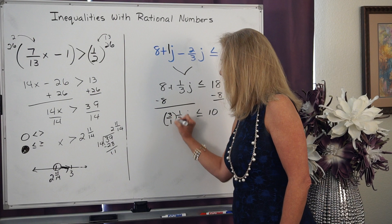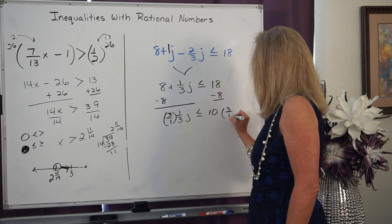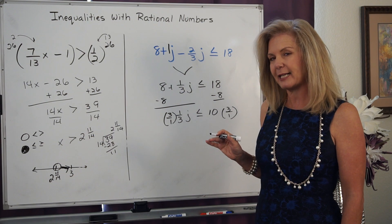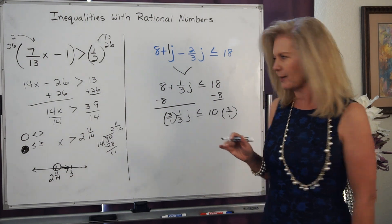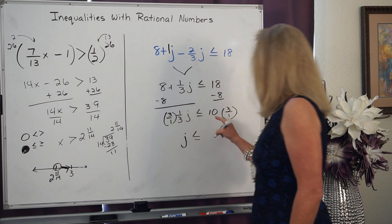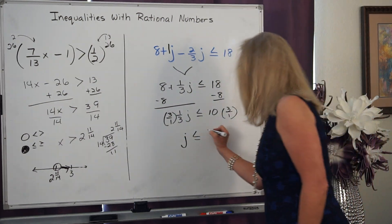So I'm going to multiply both sides by 3 because I know a fraction times this multiplicative inverse, otherwise known as its reciprocal, always equals 1. So I'm left with J. And 10 times 3 is 30.